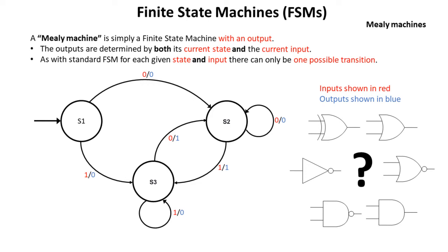Let's have a look now at Mealy machines. A Mealy machine is simply a finite state machine with an output and this is more likely the sort of thing you might see in an exam. The outputs are determined by both the current state and the current input. Just as with a normal finite state machine, for any given state and input there can only be one possible transition.